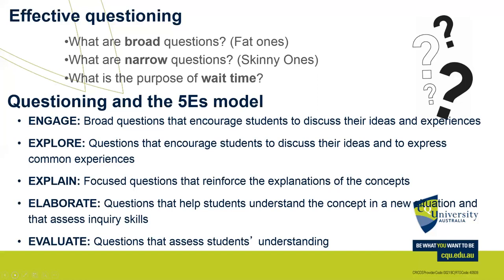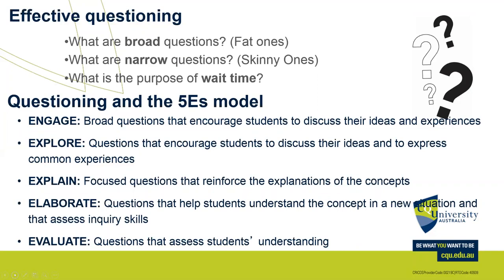At the elaborate stage, questions that help students understand the concept in new situations and assess inquiry skills — application-type questions. Finally at evaluate, questions that assess the student's understanding. You can assign a Bloom's level to each of those phases if you like, or simply refer to the questioning paradigms embedded in each stage of the 5E model. As you read a Primary Connections unit, look for these clues — the units are not put together accidentally; they're very deliberately designed. If you understand how they're written, assessment task two should be a walk in the park.